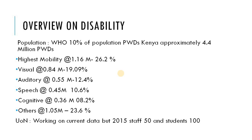We have auditory disabilities at 0.55 million, which translates to 12.4%. Then speech disabilities at 0.45 million, which translates to 10.6%. Cognitive disabilities at 0.36 million, which translates to 8.2%. And other disabilities, which are mostly invisible, at 1.05 million, which translates to 23.6%. At the University of Nairobi, we are currently working on the data, but in 2015 we had 50 staff members with disabilities and 100 students with various disabilities.